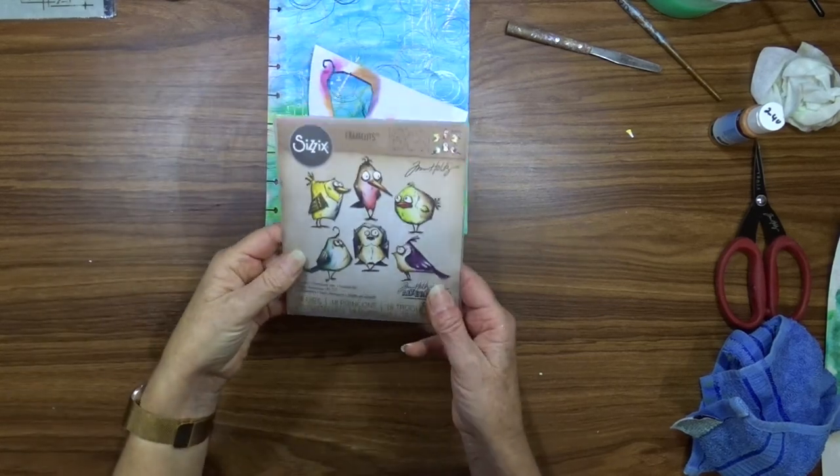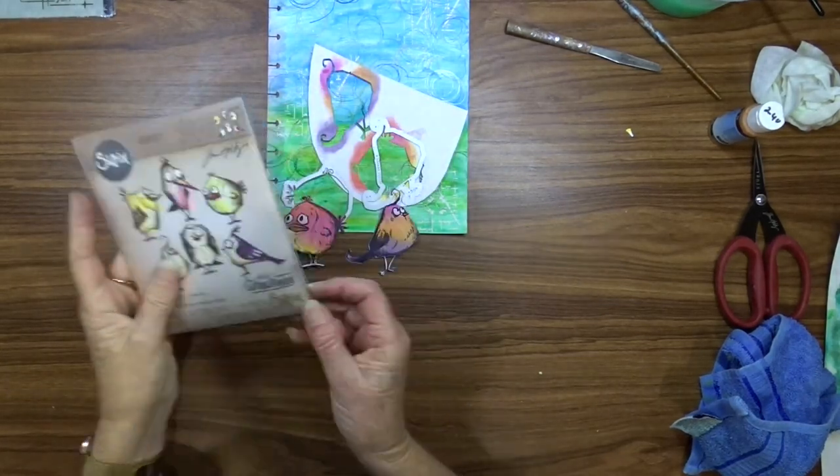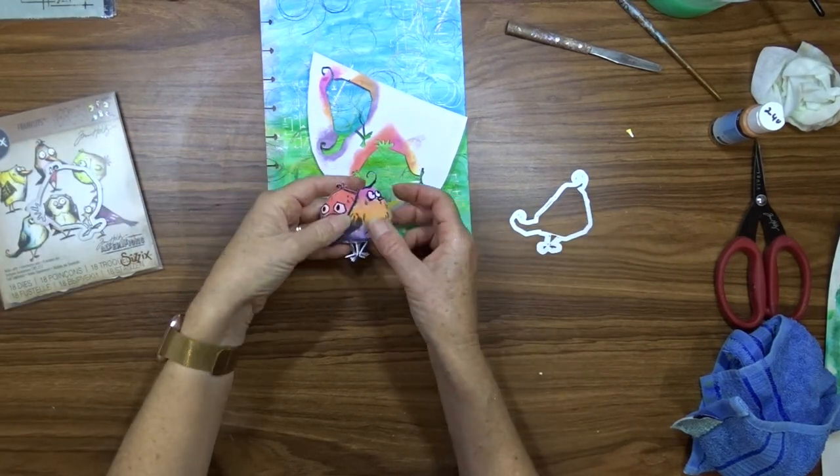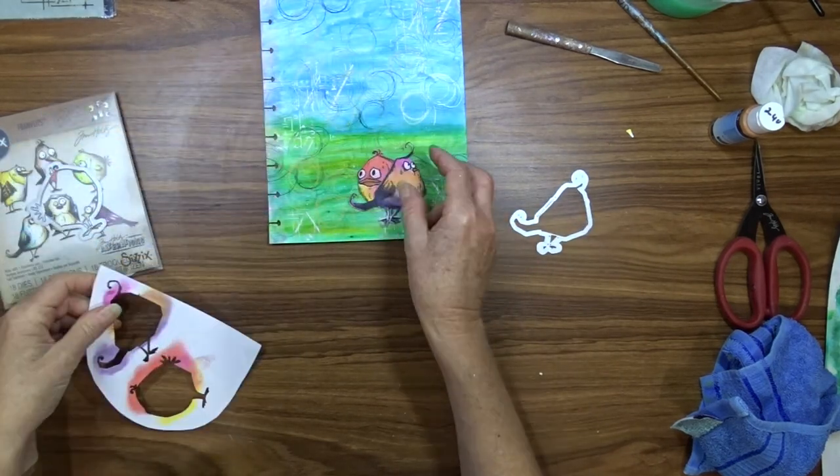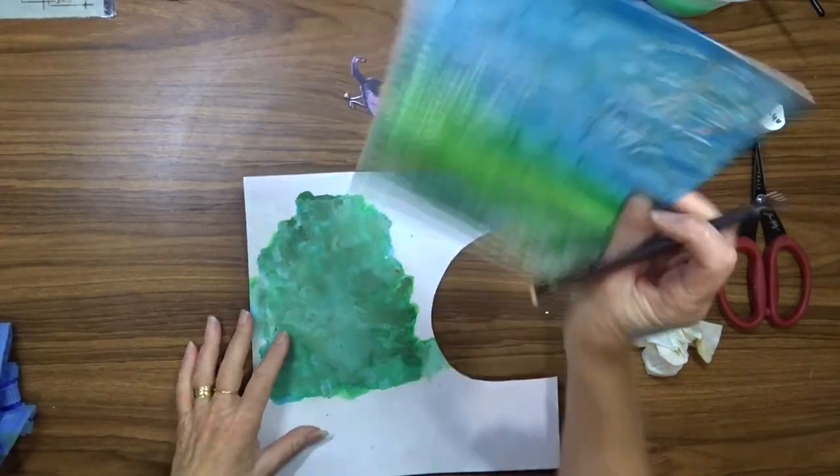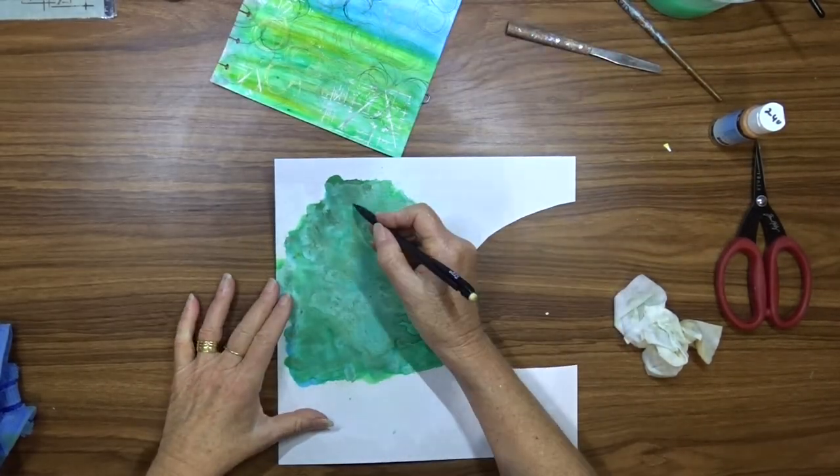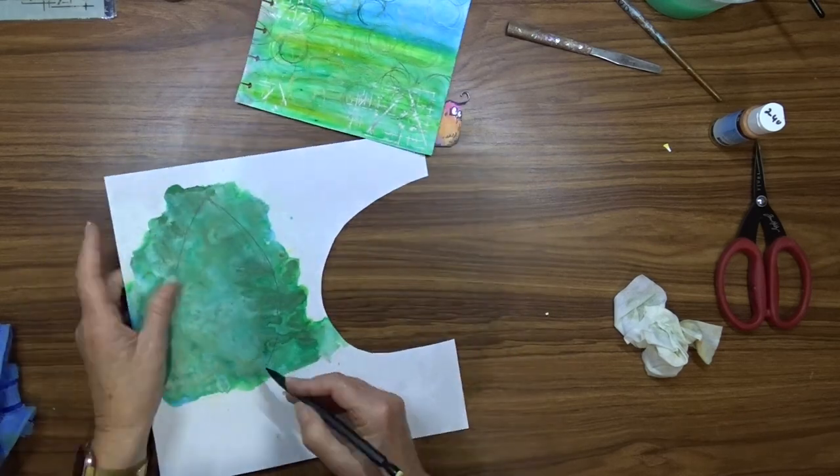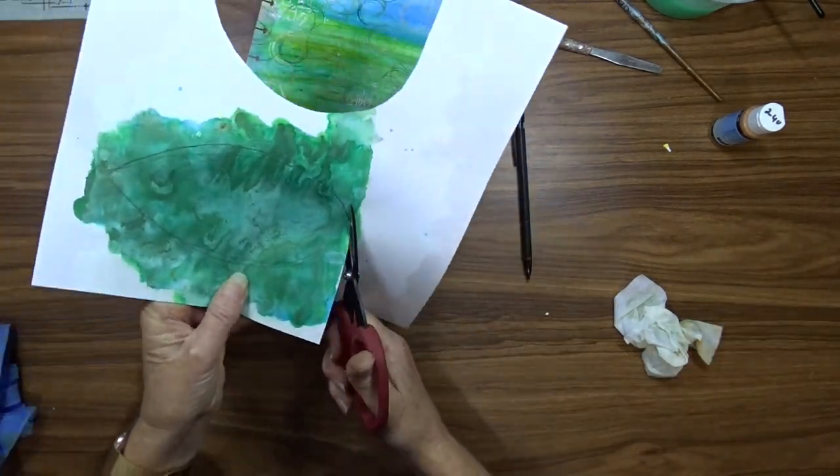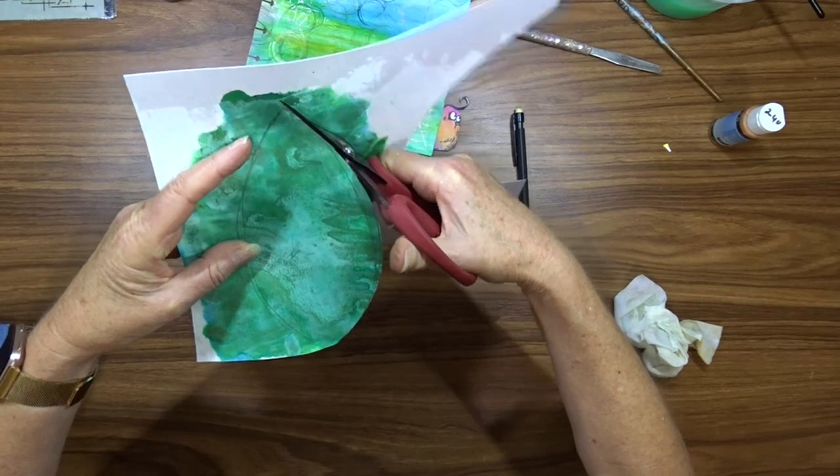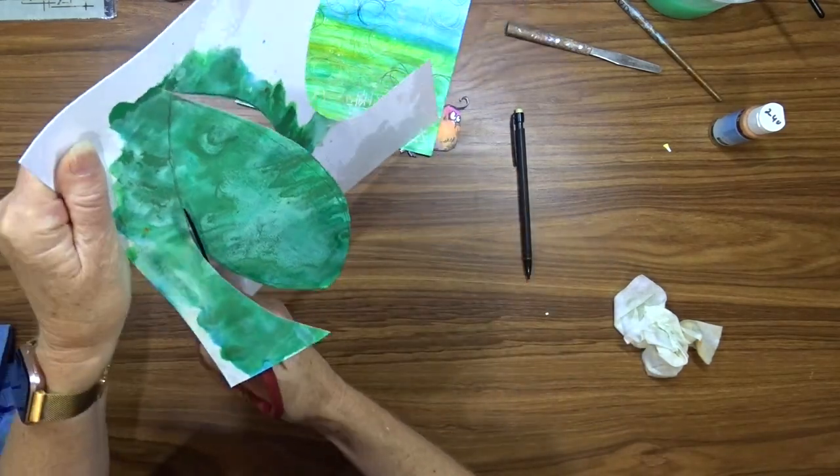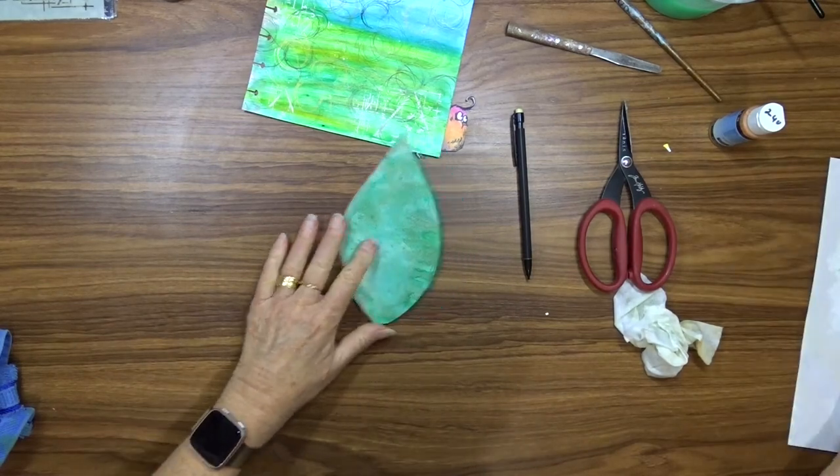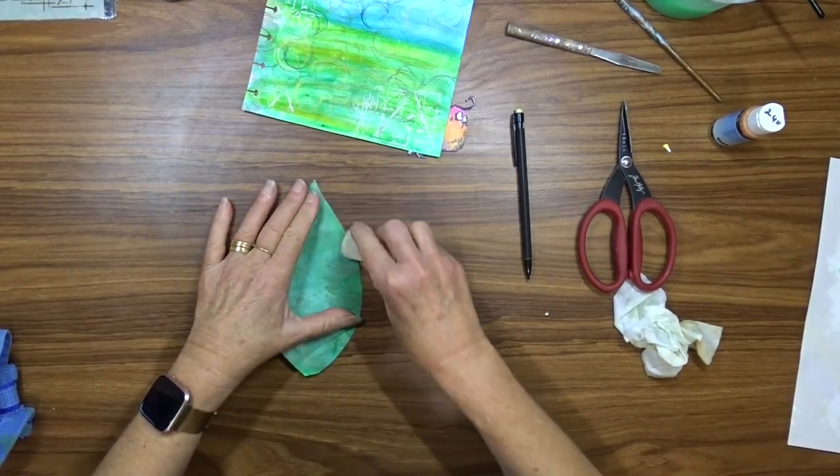Using the corresponding die I cut my birds out. Time to make the tree now. So I use a pencil and draw a tree shape in the green powders that we had put on the gesso background paper and then I use my scissors to cut around that tree or around that line that I'd put on there.